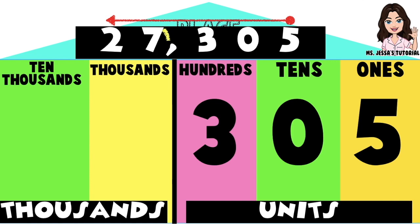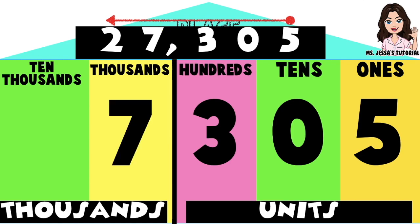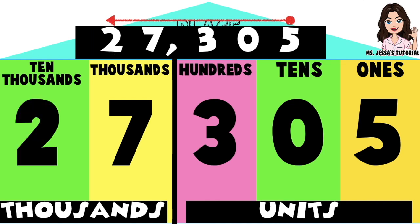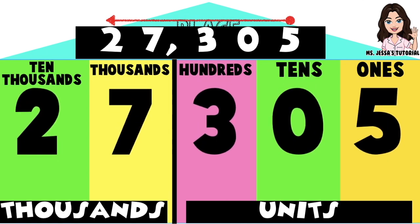So digit 7 will be in the thousands place. And lastly, the fifth digit from the right is digit 2. Digit 2 is in the tens thousands place. So these are the place values of the digits in 27,305.